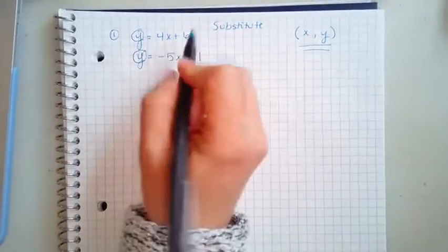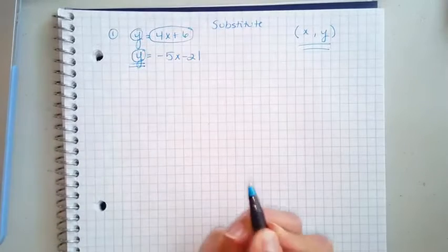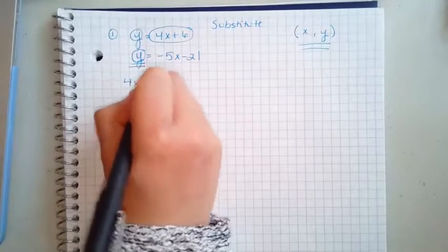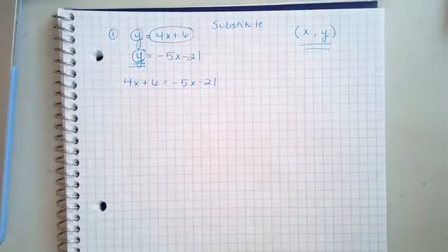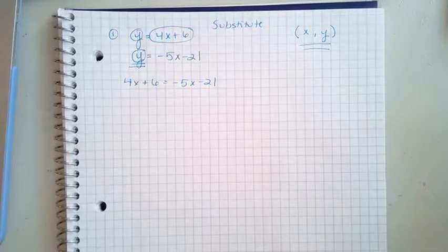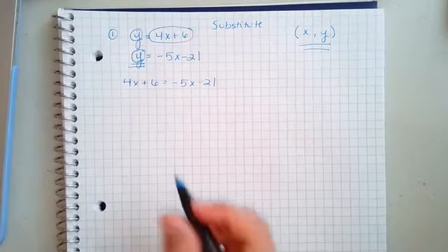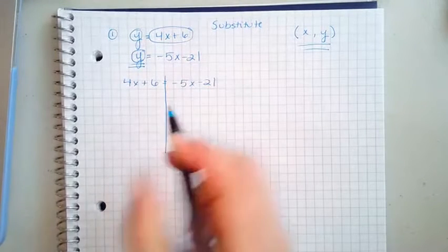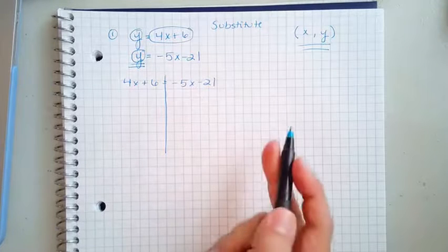So what I'm gonna do is where there's a Y in this equation, I'm now gonna write all of that. Okay, and now this is a problem we've been doing for a while. Doesn't make it easy, but at least it makes it familiar. So now our job is to solve for X. X is the only variable here, so that means we're set to start.